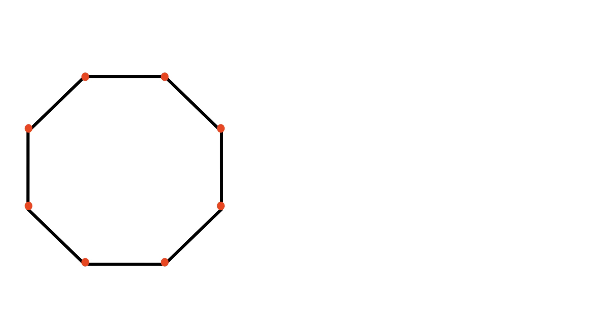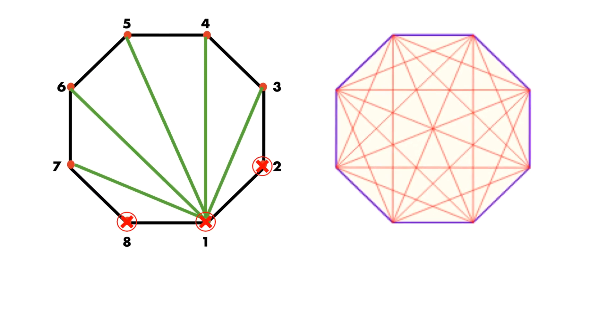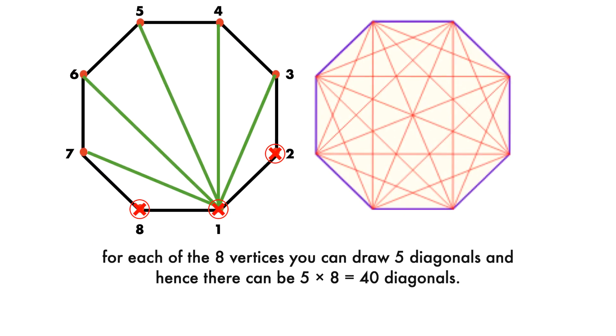Let me explain the solution now. Octagon is an 8-sided polygon. If you draw an octagon, select one vertex and construct each diagonal from this vertex, you will see there are 5 such diagonals. Thus for each of the 8 vertices you can draw 5 diagonals, and hence there can be 5 times 8, which equals 40 diagonals.